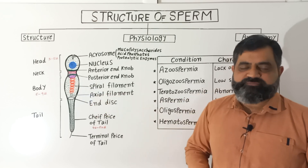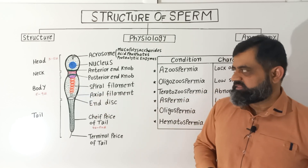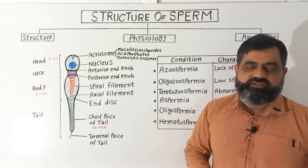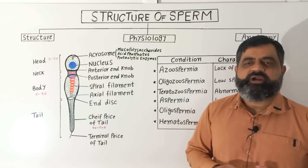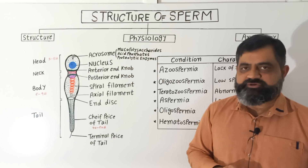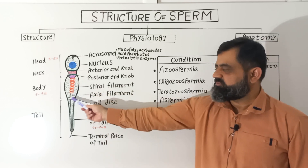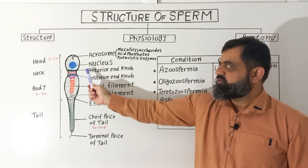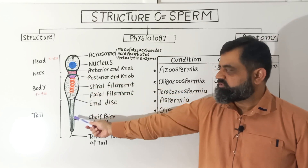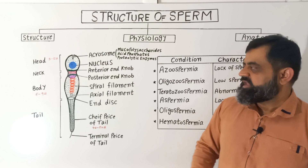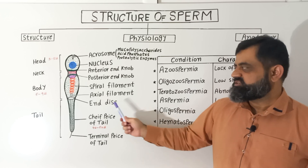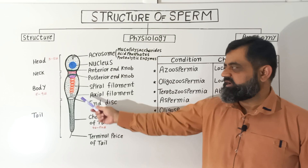Just below the neck region there is the body of the sperm, which is five to nine microns in length. It contains a spiral filament, shown in red in the diagram, which contains mitochondria — the potential source of energy for the movement and motility of the sperm. In the center there is the axial filament, which arises from the neck region and runs along the whole length of the body. At the end of the body there is also a disc made up of centriole, a hollow disc known as the end disc, after which the tail starts.